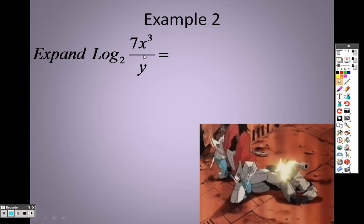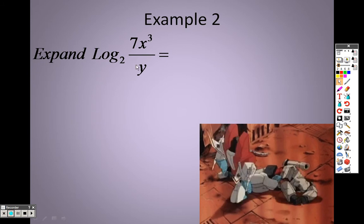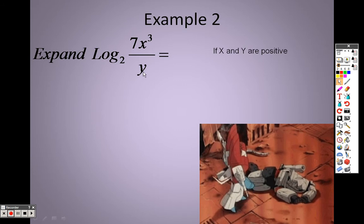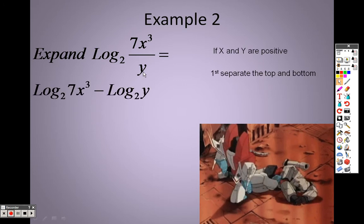So according to our rules, there is the quotient property that we went over, which states that when you have a division sign, you can separate it with subtraction. So I can do log base 2, 7x^3, minus log base 2, y.